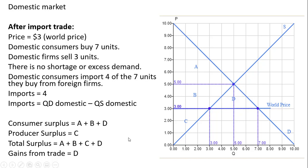Before trade, total surplus was just A, B, and C. Now it is A, B, C, and D — the difference being this additional area benefiting consumers. Consumer surplus expanded by areas B and D by allowing trade. Without trade, consumer surplus was just area A; now it encompasses B and D. Producer surplus is just C now — at one time, producer surplus was B and C. So producers lost area B, but that loss was captured by consumers.